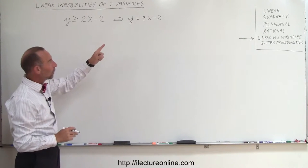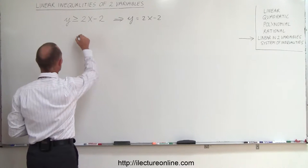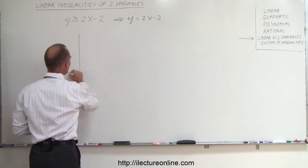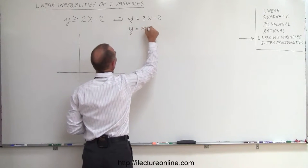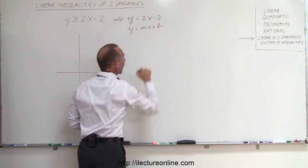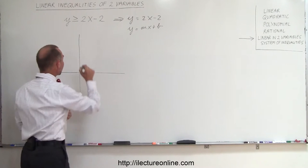Now we're going to graph that equation. We know how to do that because we have the general format, y equals mx plus b. That's the slope, and that's the y-intercept.